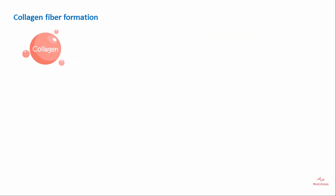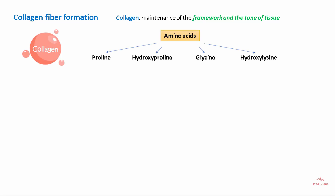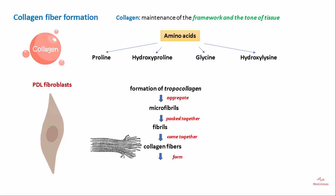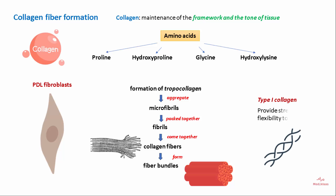Collagen fiber formation is important in the formation of periodontal ligament fibers. Collagen maintains the framework and tone of the tissue and is formed of multiple amino acids, mainly proline, hydroxyproline, glycine, and hydroxylysine. Collagen formation occurs within the PDL fibroblast: tropocollagen is formed, which aggregates to form microfibrils; multiple microfibrils are packed together to form fibrils; fibrils come together to form collagen fibers; and all collagen fibers come together to form collagen fiber bundles. Type 1 collagen is predominantly present in the periodontal ligament and provides strength and flexibility to the tissues.